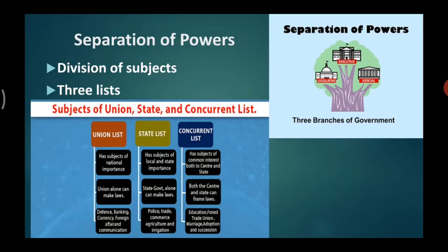Now let us study about the separation of powers. The constitution has divided the subjects for making laws between the union government and the state government. The power is also divided between these two governments. Our constitution has given three lists of various subjects: the union list, the state list, and the concurrent list.